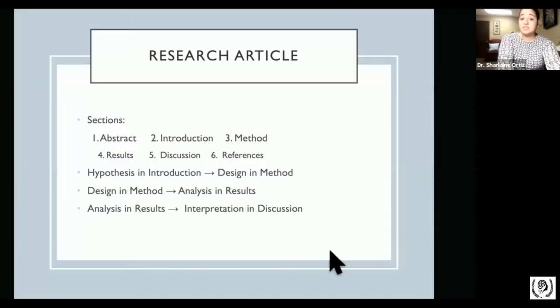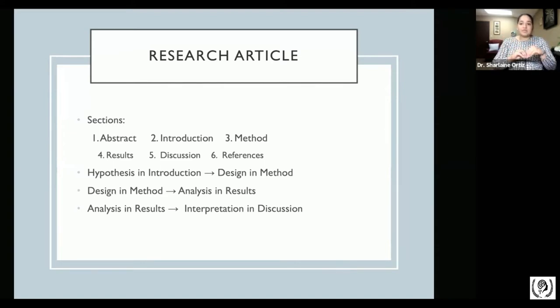Irrespective of which branch of science we're talking about — medical, physics, or psychology — research generally looks exactly the same from one field to the other. It starts with your abstract, goes to your introduction, then methods, results, discussion, and finally references. The reason we need this structure is so that if I know the first thing I'll see is the abstract and the second is the introduction, I know exactly where to look and what type of information I'll find.